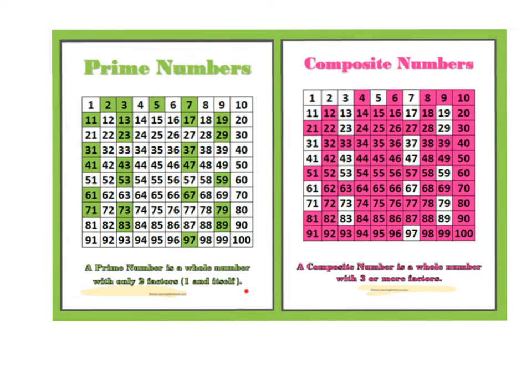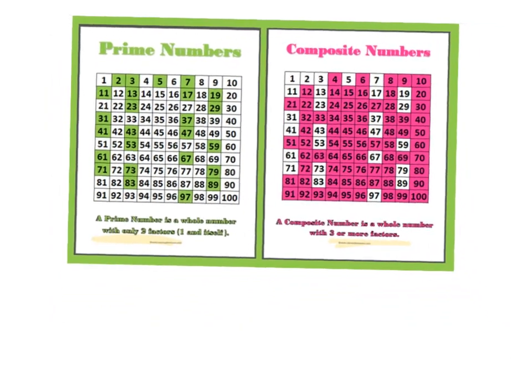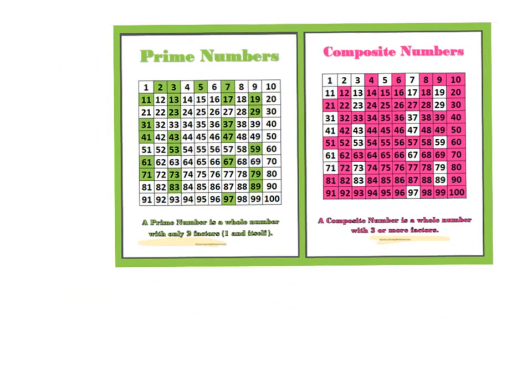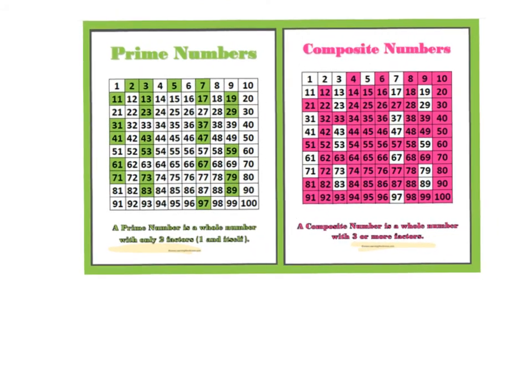So the definitions are on the bottom here. A prime number is a number, a whole number, with only two factors, one and itself. So an example of that, or several, are all these green highlighted numbers.